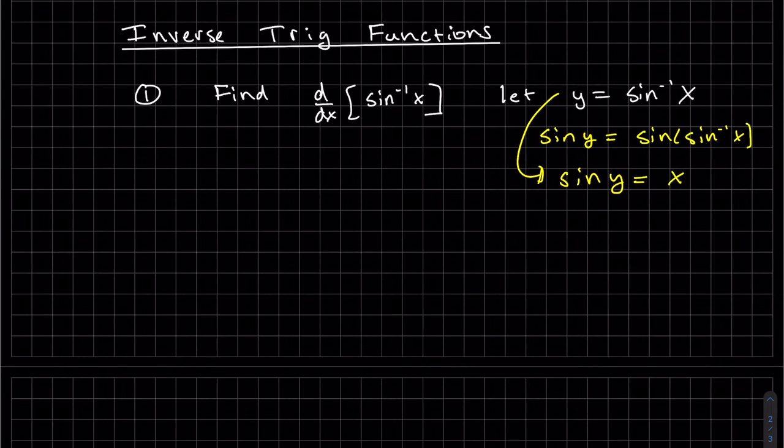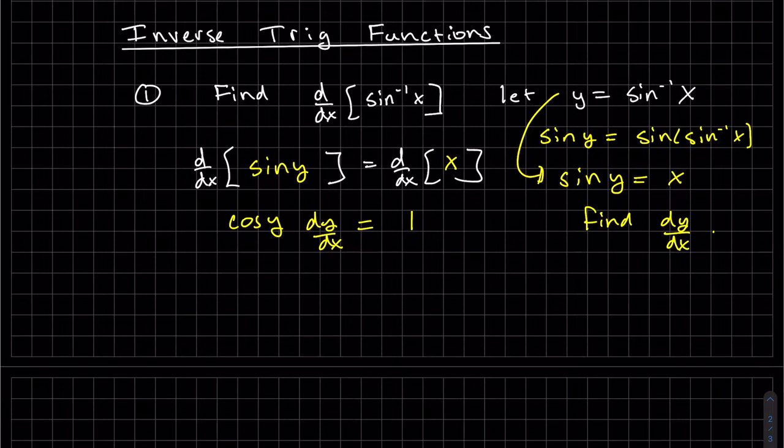So now that we have that, we want to basically find dy/dx of that equation. So that's what we're doing. We're taking d/dx of this equation. So we know what the derivative of sine of y is. It's cosine of y. But we have to chain rule it times the derivative of the inside. Derivative of x is 1, dx/dx. Just 1. Solve for dy/dx.